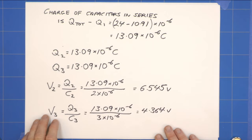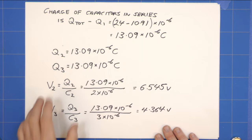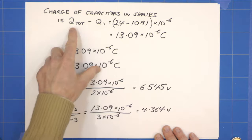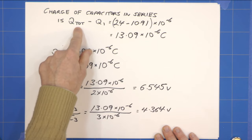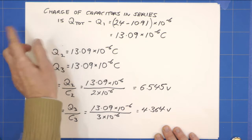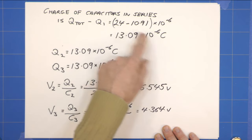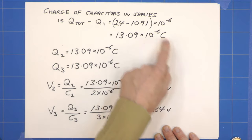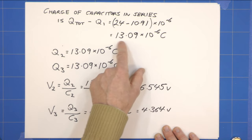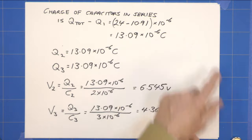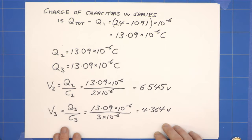The charge on the capacitors in series is the total charge, because that can't change, minus the charge that's left on capacitor 1. So it's 24 microcoulombs minus 10.91 microcoulombs and we get 13.09 times 10 to the minus 6 coulombs.